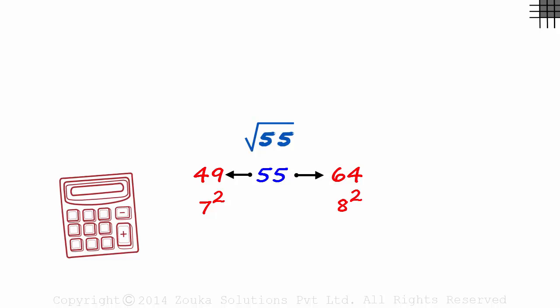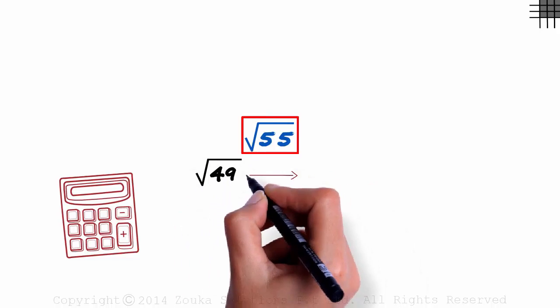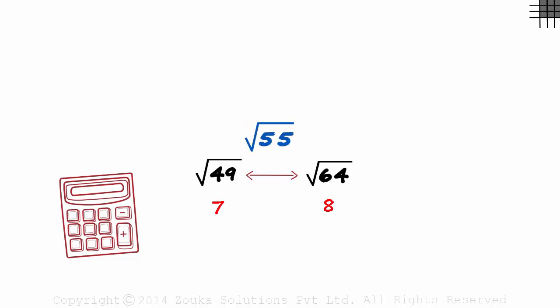That gives us a big hint. Root 55 lies between root 49 and root 64. It lies between 7 and 8.